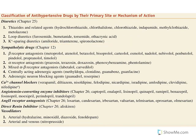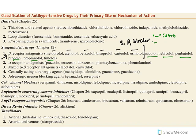Moving to sympatholytics: the most prominent group is beta-receptor antagonists. Metoprolol, atenolol, betaxolol, bisoprolol, carteolol, and esmolol are all specific beta-1 blockers — they are cardioselective and have fewer pulmonary side effects. Non-selective beta-blockers include nadolol, nebivolol, penbutolol, pindolol, propranolol, and timolol. All of them cause negative inotropy and negative chronotropy, which reduce cardiac output and reduce blood pressure.